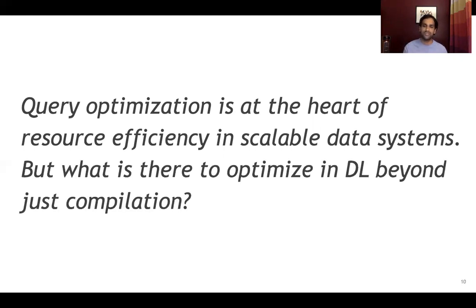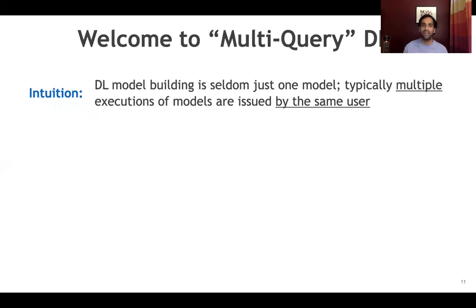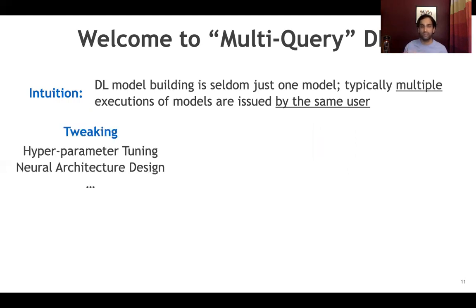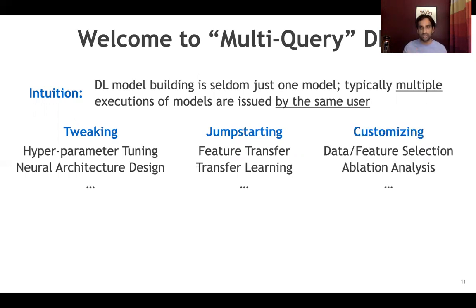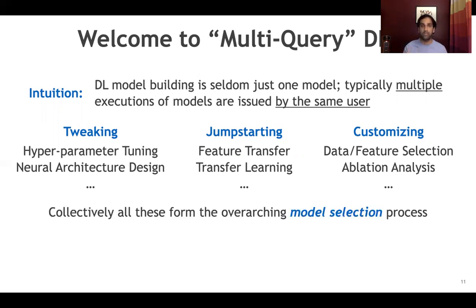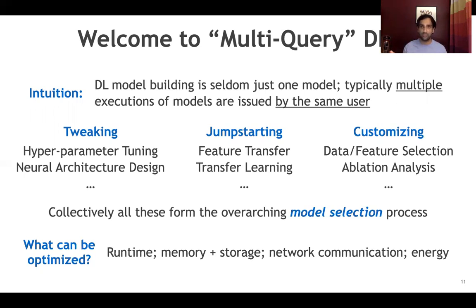But the question then becomes: what is there to optimize in deep learning systems beyond just compilation that they're already doing? This is where I'd like to introduce you to the era of multi-query deep learning. If you look into deep learning practice, you will realize that model building is seldom just building one model. You typically have multiple models being executed by the same user, for various kinds of reasons — could be for tweaking the model's accuracy, say, for hyperparameter tuning and architecture design. There's also jump-starting, where you borrow models from previously built executions through transfer learning techniques. You could customize application tasks by subsetting the data and features, doing ablations on the model, and so on. All of these are basically forms of an overarching process called model selection. By understanding how these computations are related, we can optimize for everything across all the metrics we care about.